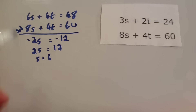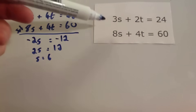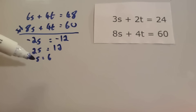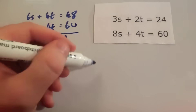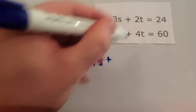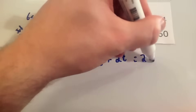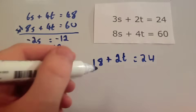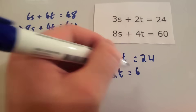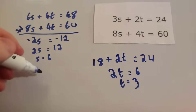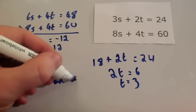With s equals 6, substitute into the original top equation: 3 times 6 is 18, so 18 plus 2t equals 24. Take away 18 from both sides to get 2t equals 6, then halve to get t equals 3. So the solution is s equals 6 and t equals 3.